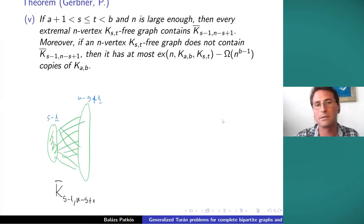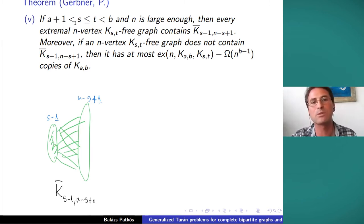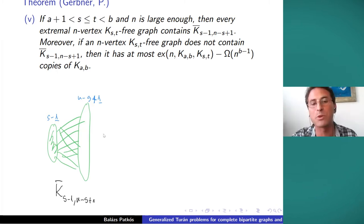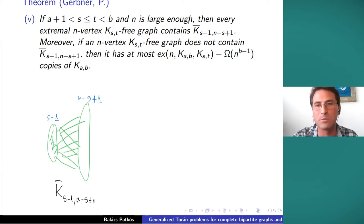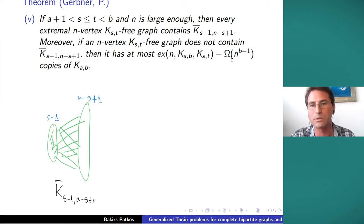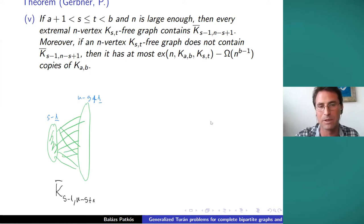Another result: if s is strictly larger than A plus one, then the statement is similar to the previous case, but now it's a supergraph of that — we also add edges in the smaller part, denoted by this K-bar graph. The result is analogous: if a K_{s,t}-free graph doesn't contain this particular graph, then it's not extremal and not even close, because there is stability — at least a constant times n^{B-1} fewer occurrences of the counted complete bipartite graph.